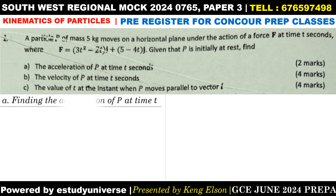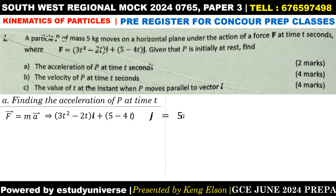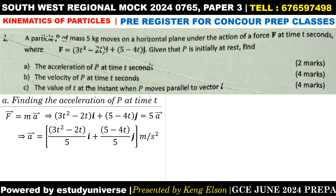We begin with the first part, which asks us to find the acceleration of the particle. Acceleration is a vector quantity. We have the mass and the force, so we use F equals ma. The only force acting in the system is the given force — there is no resistive force. The mass was given as 5 and the force was also given, so we divide both sides by the mass to get the acceleration in meters per second squared.